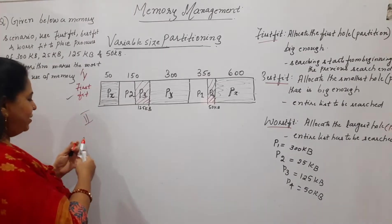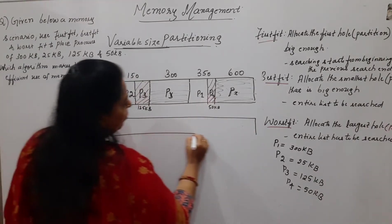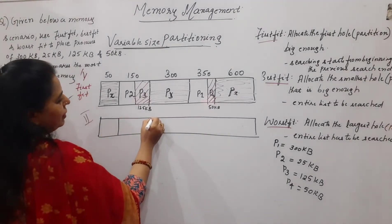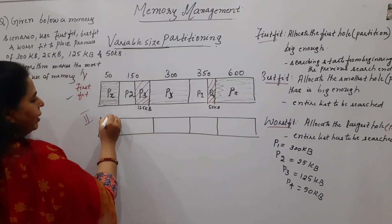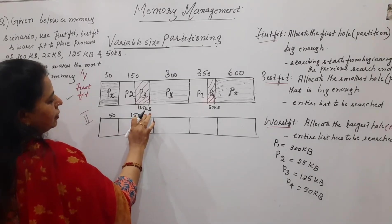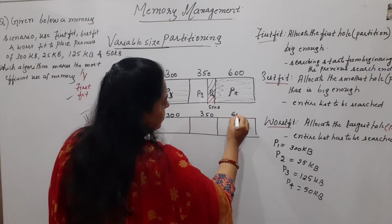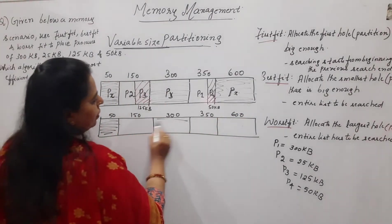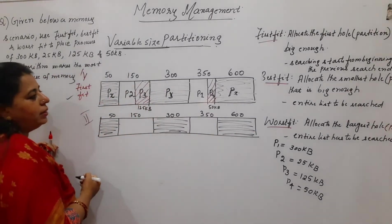Now carry out the best fit. Before applying best fit, start drawing the memory partitions again and write down the values: 50 KB, 150 KB, 300 KB, 350 KB, and 600 KB. The partitions that are already occupied — fill those in. Now apply the best fit: allocate the smallest partition that is big enough.